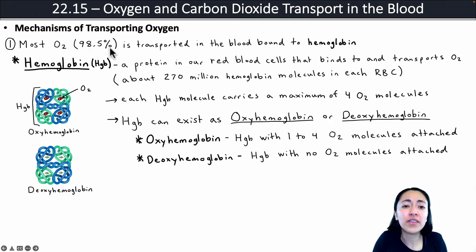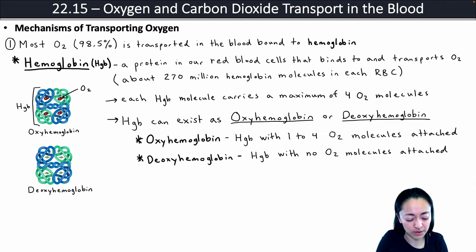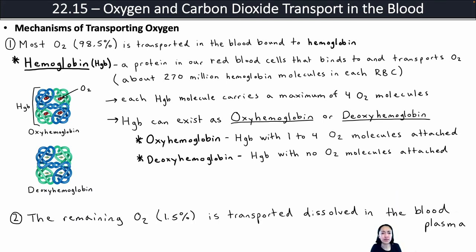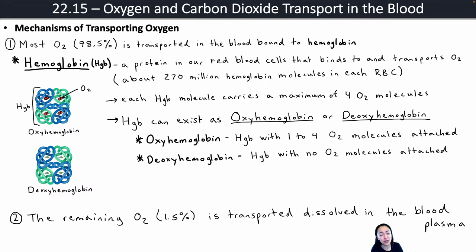About 98.5% of the oxygen in your blood is transported bound to hemoglobin. The remaining 1.5% of oxygen is transported dissolved in the blood plasma. That's only a small amount because oxygen is not very soluble in blood plasma, so it's really hard for it to dissolve and be transported that way.